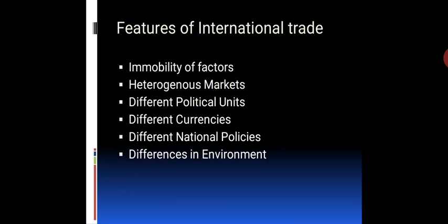Now let us discuss the features of international trade. The first feature is immobility of factors. It relates to laws relating to immigration and citizenship, which restrict the mobility of labor between countries. Capital flows are also restricted by some countries.